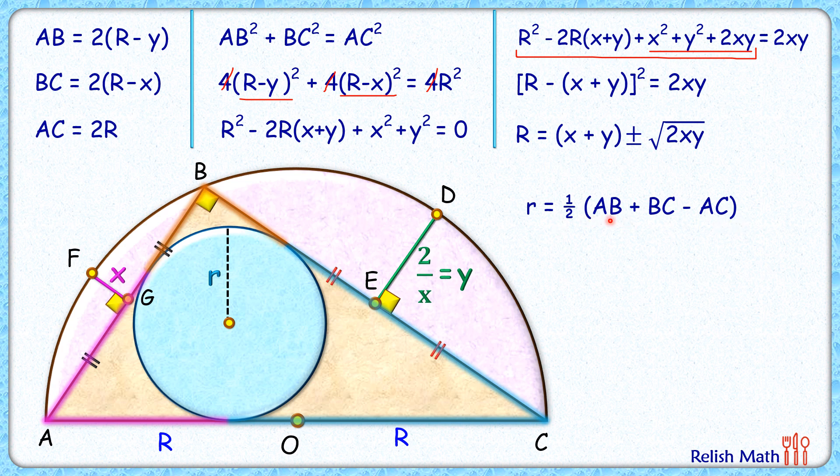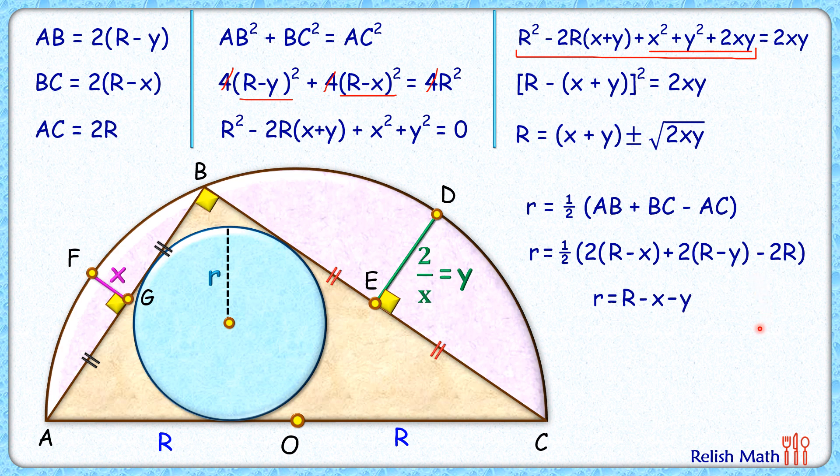So moving ahead, putting the values of AB, BC and AC as these values which we have derived earlier, we will get small r as this. Simplifying it we will get small r as R - x - y.